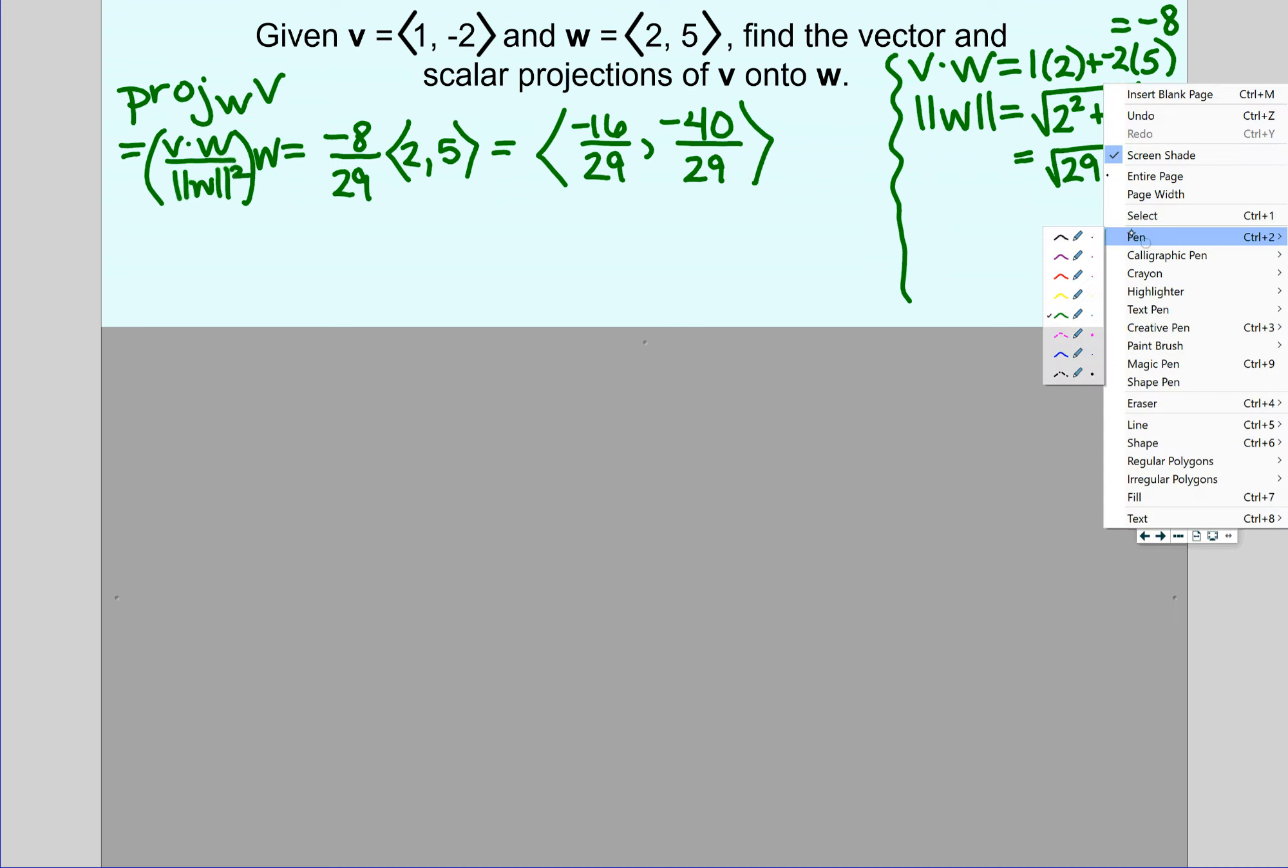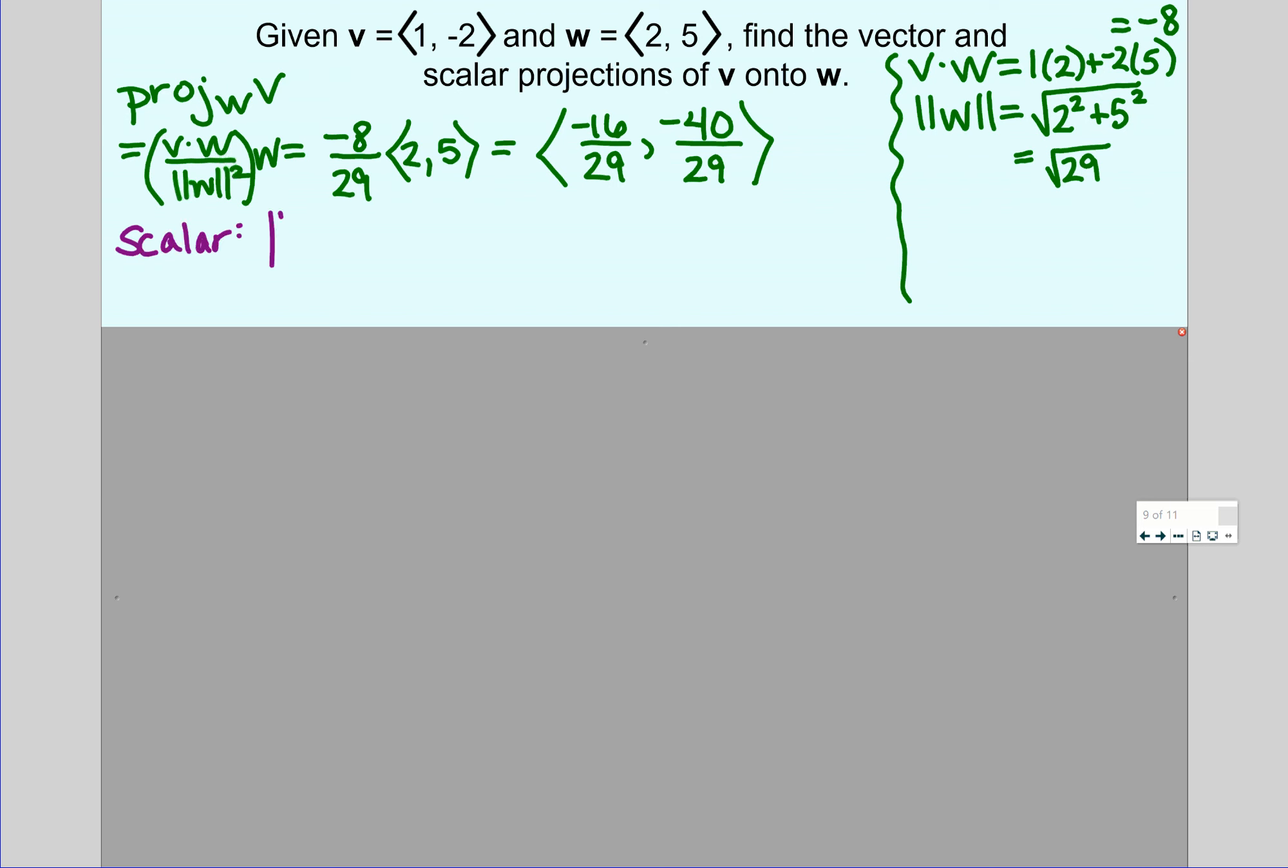The other thing we need to find is the scalar projection. The scalar projection is just the magnitude of what we just found: negative 16, 29ths and negative 40, 29ths. Which is our little Pythagorean theorem. 16 over 29 squared plus 40 over 29 squared. And this gets a little gross, so we'd probably use a calculator for that. I'm just going to approximate it here, because we don't get a nice, pretty answer. It's about 1.49.